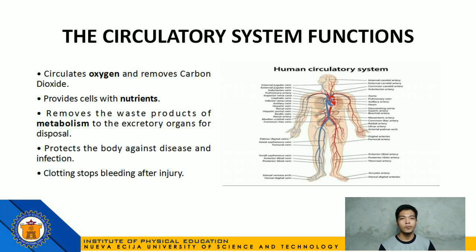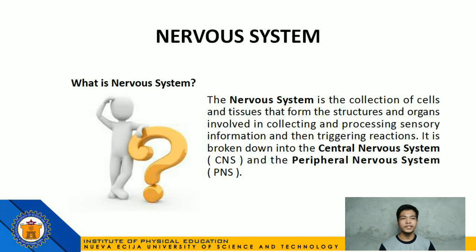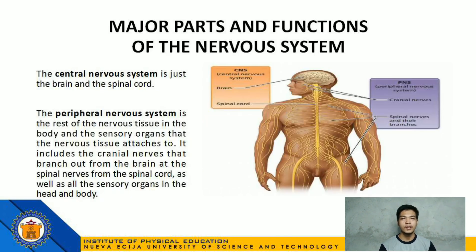Moving forward, we have the nervous system. The nervous system is the collection of cells and tissues that form the structures and organs involved in collecting and processing sensory information and triggering reactions. It is broken down into the central nervous system and the peripheral nervous system. The peripheral nervous system is the rest of the nervous tissue in the body and the sensory organs it attaches to, including cranial nerves that branch out from the brain and spinal nerves from the spinal cord, as well as all the sensory organs in the head and body.